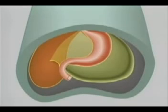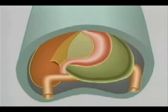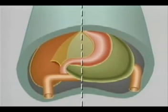To see how the greater omentum develops, we first add the transverse colon to the picture. The dorsal mesogastrium hangs down in front of the transverse colon. To follow its growth, we'll look at a sagittal section made in this line.